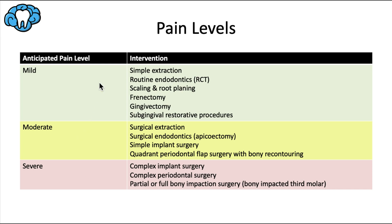In this table we have anticipated post-procedural pain in the left column and examples of procedures in the right column. For mild pain: simple extraction or a few simple extractions, routine endodontics (root canal treatment), scaling and root planing, frenectomy, gingivectomy, and subgingival restorative procedures. For moderate pain, we bump some of these up — from simple to surgical extraction involving bone removal, surgical endodontics like an apicoectomy, simple implant surgery, and quadrant periodontal flap surgery with bony recontouring.